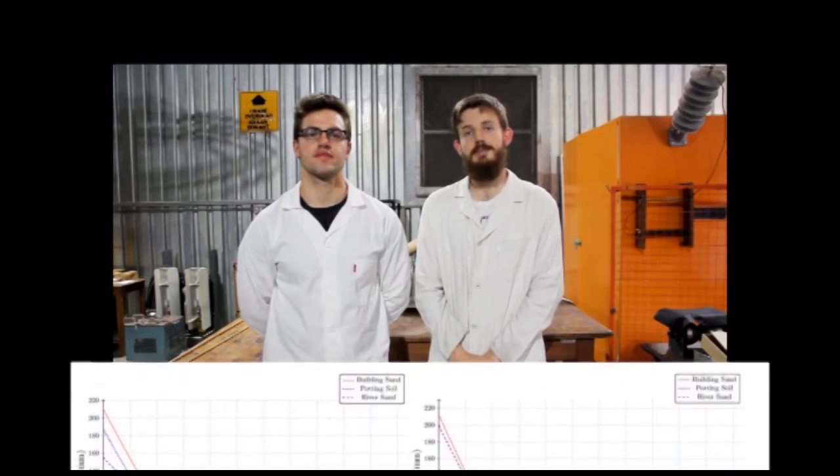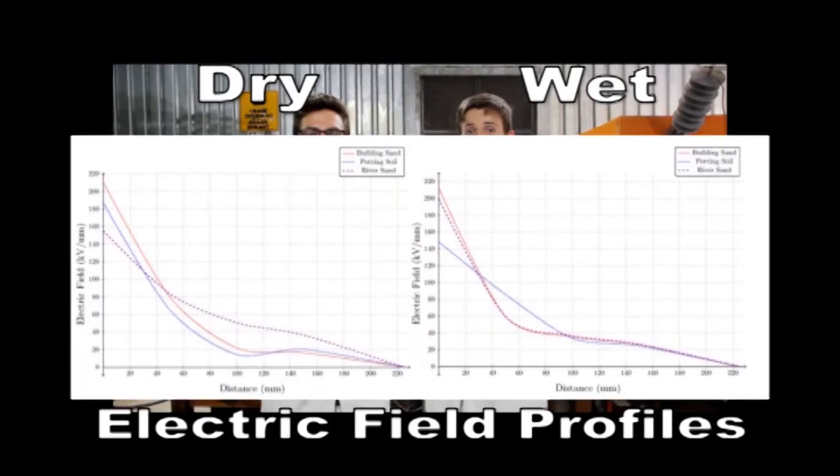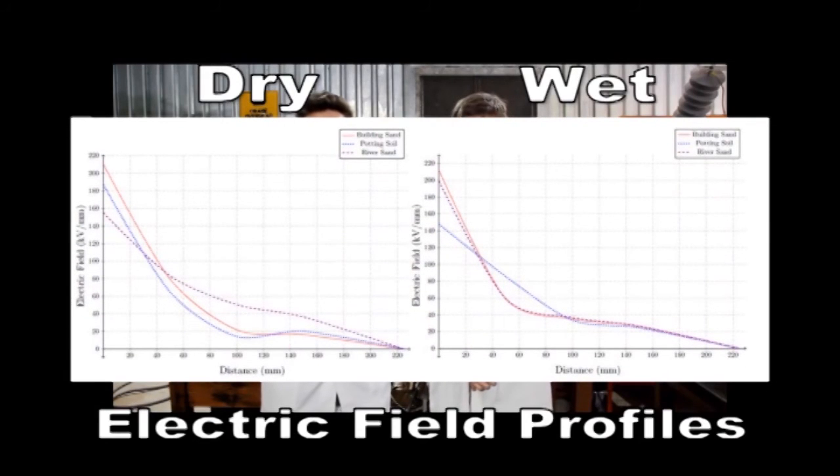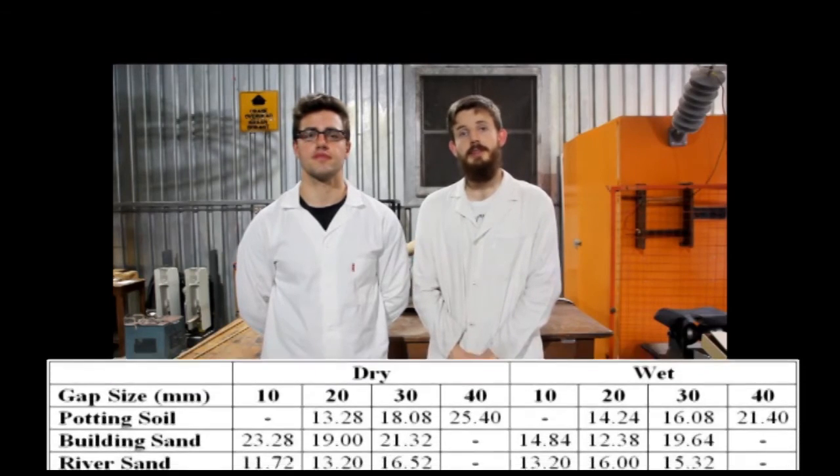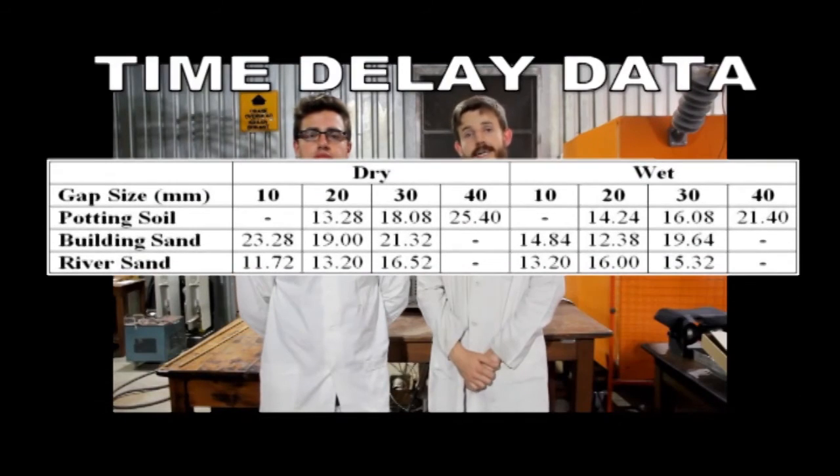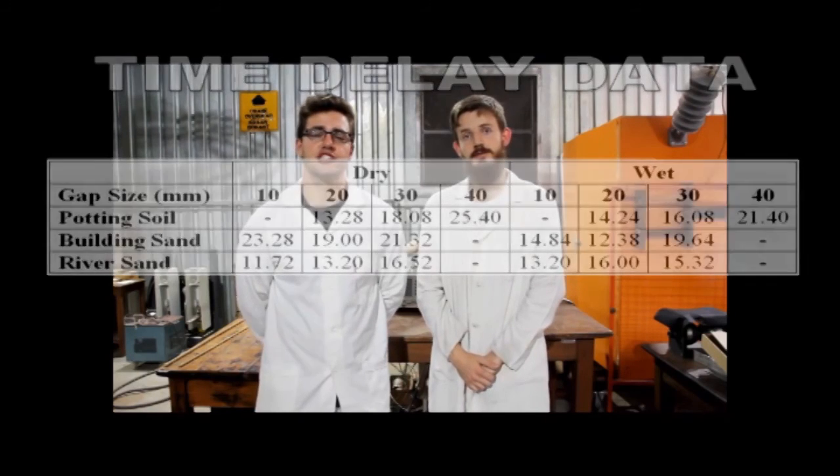In conclusion, we found that moisture content affected the electric field profiles and the ionization performances of the various soil types tested. We were also able to determine, within a reasonable degree of accuracy, the resistivity value for each of the soils tested, when compared to the values we found within literature. Time delay data gathered supported other evidence that showed that soil ionized more efficiently when wet, unless it became saturated.